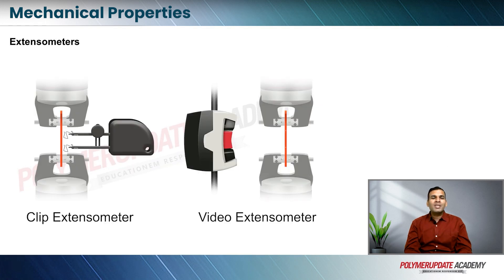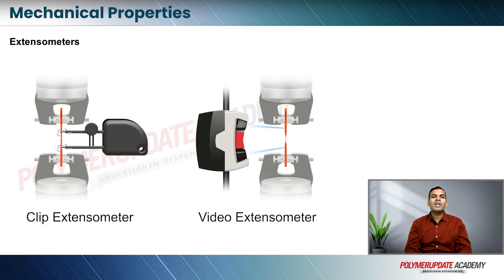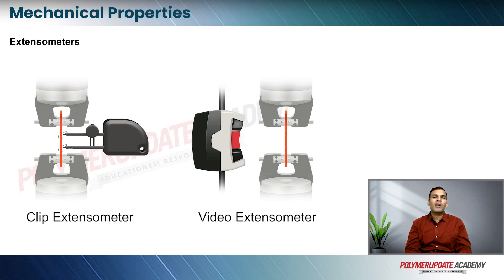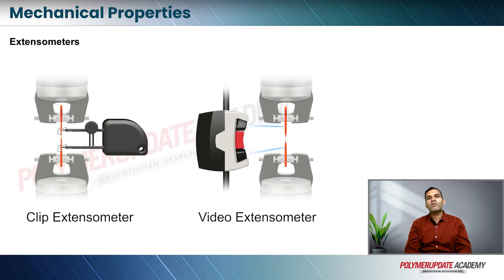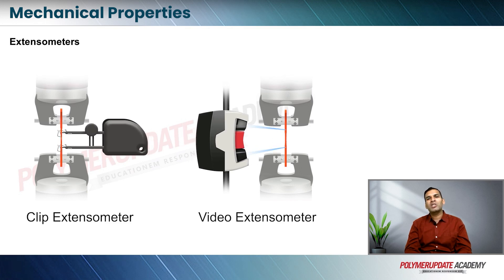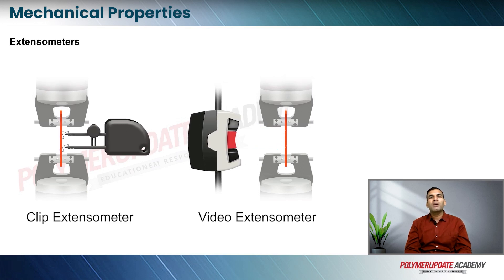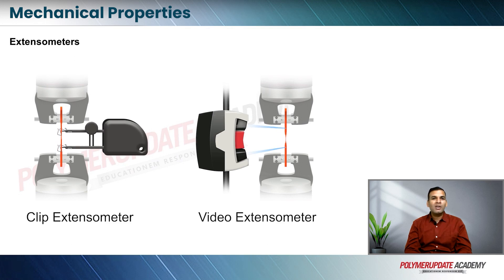You need to have an extension indicator, which is also commonly known as an extensometer. On this slide, what you are seeing is two different images of an extensometer — there is a clip extensometer and there is a video extensometer. The extensometer is primarily used for measuring the extension rate.